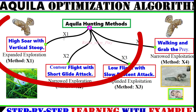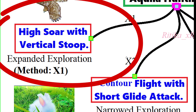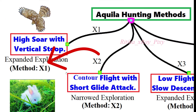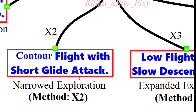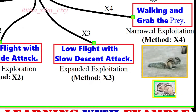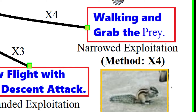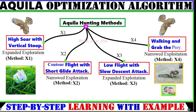There are four hunting methods used by Aquila. The first method is expanded exploration — that is high soar with vertical stoop — where the target is hunted during flight. The second method is narrowed exploration — counter flight with short glide attack — the most common method used to hunt ground squirrels. The third method is low flight with slow descent attack, which is expanded exploitation, used for hunting slow prey. The fourth method is narrowed exploitation — walk and grab the target — used to hunt large-size prey.